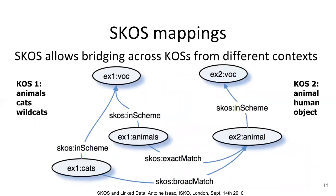SKOS supports the assertion of relationships between concepts that are in separate concept schemes. In this example, concept scheme one has animals, cats and wild cats. Concept scheme two has a concept animal, which is judged to be sufficiently the same as animals in concept scheme one. It is reasonable to assert an exact match relationship between animal and animals. Because these concepts enjoy an exact match relationship, it is also reasonable to assert that cats from concept scheme one has a broader match with animal from concept scheme two. Apart from broad match and exact match, SKOS also provides narrow match, related match and close match.